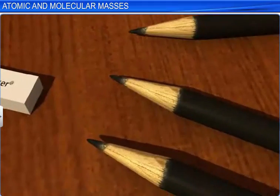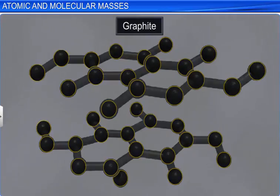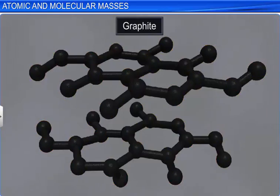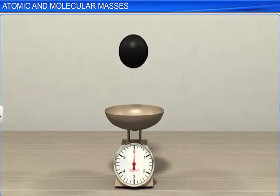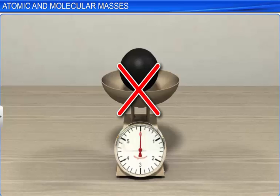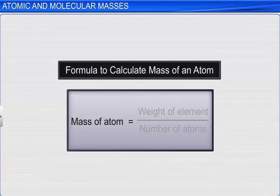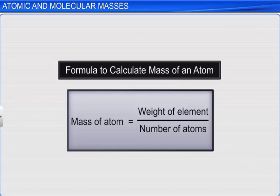On discovering that matter is made up of atoms, scientists' attention was shifted towards identifying the mass of atoms. Since atoms were small particles and could not be separated, scientists were not able to determine the actual mass of an atom by weighing it. It was possible to calculate the mass of an atom by weighing an element and then dividing the weight by the number of atoms. However, there was no method to count the number of atoms available in an element.